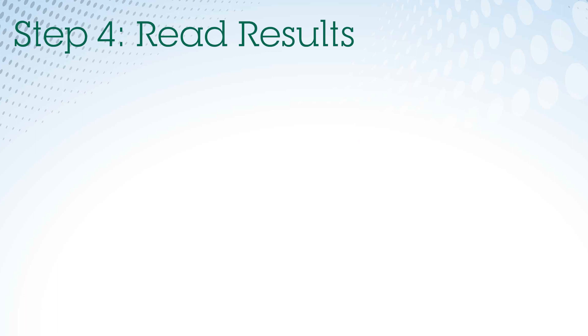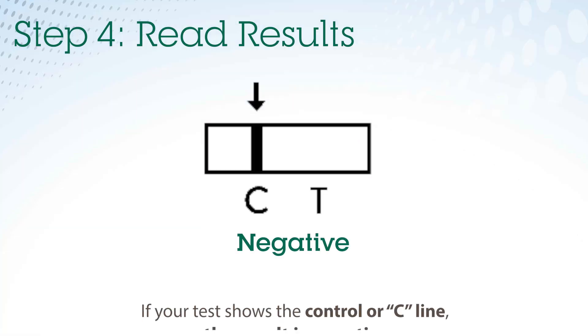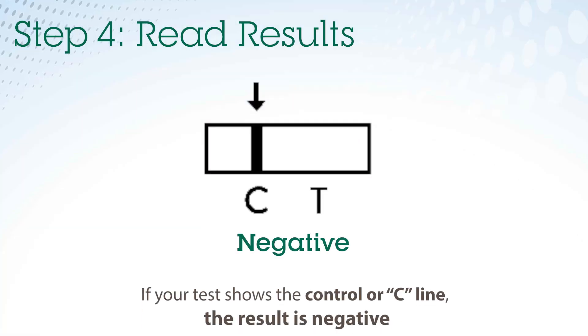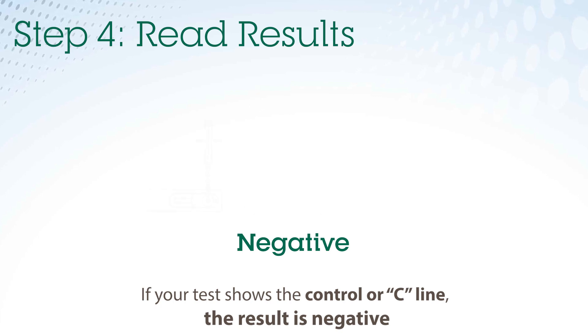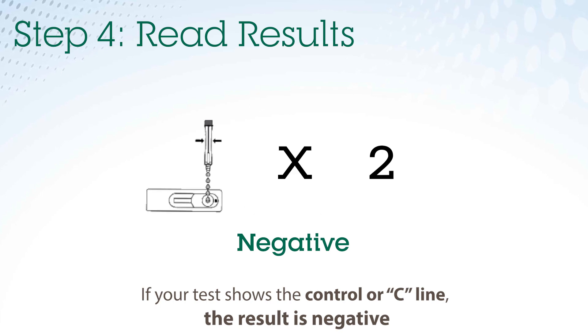Step 4: Read your results. If your test only shows the control or C line, that means the result is negative. Continue to monitor for symptoms and test again if needed.